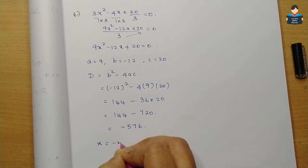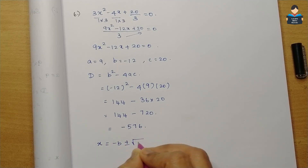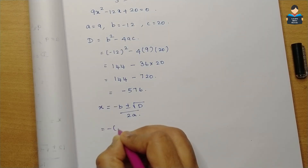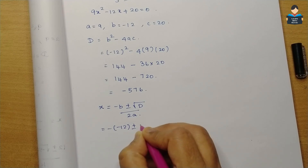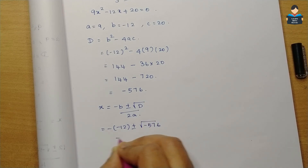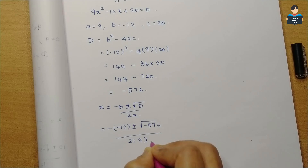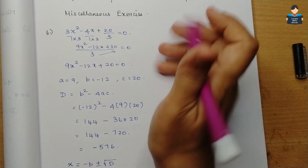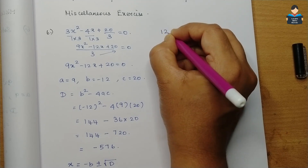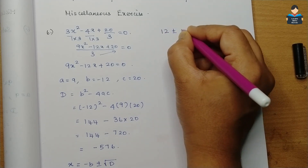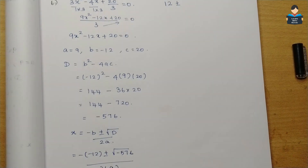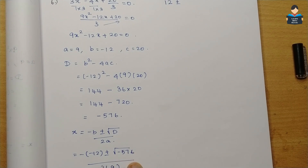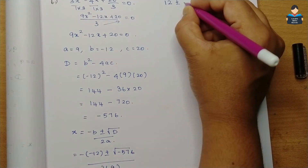x = (-b ± √D) / 2a. So x = (-(-12) ± √(-576)) / (2 × 9). Minus times minus gives plus, so we get 12 ± √(-576) / 18. Now, √(-576) involves a negative under the square root.